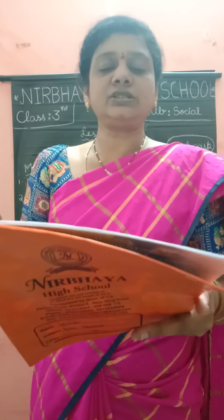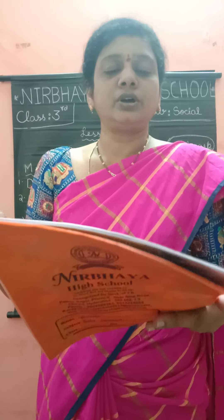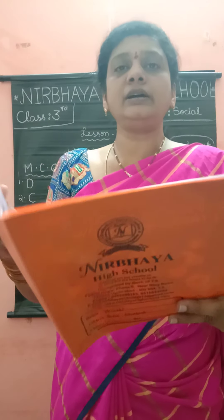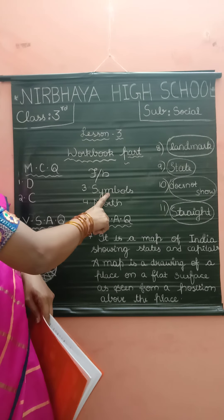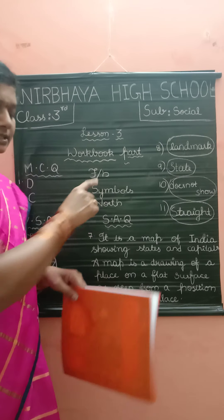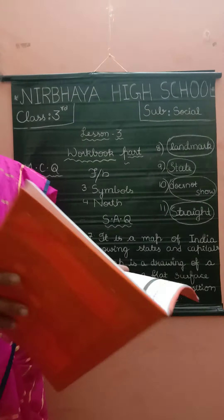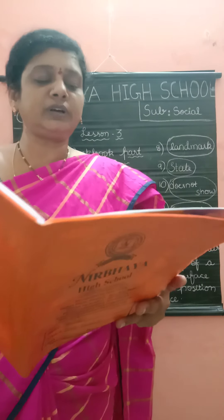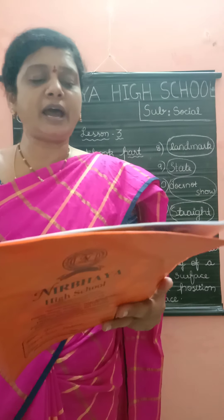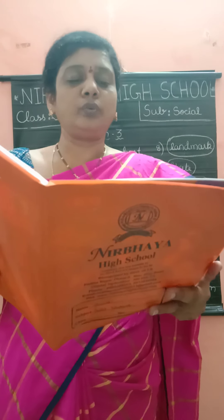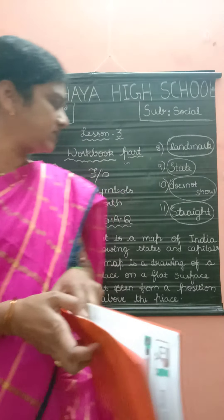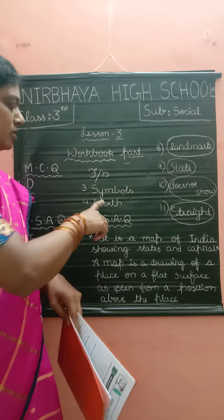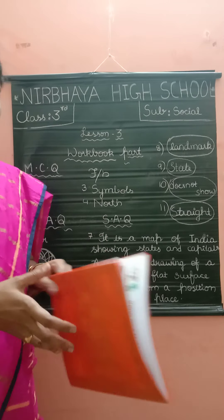Fill in the blanks, children. The signs used on a map are called — the answer — symbols. It is symbols. Yes. And the fourth one: on a map, an arrow with the letter N shows — what is that, children? North. Yes, north.